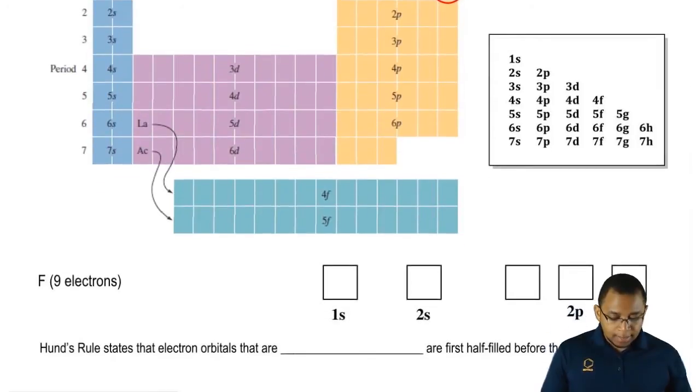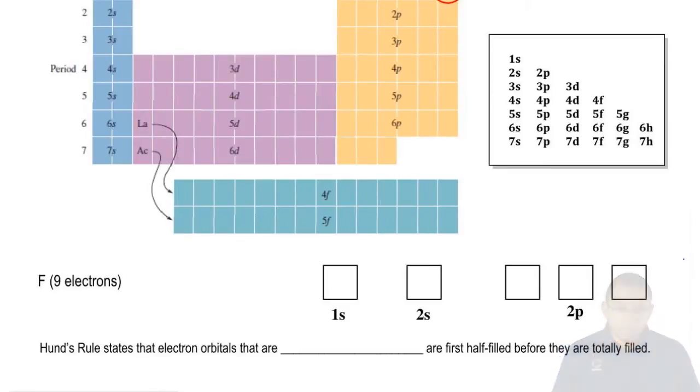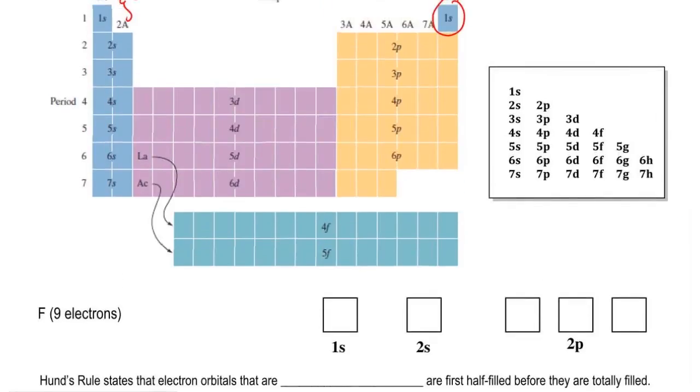Here I told us to find the electron configuration of fluorine. I'm going to take myself out of the image so we have more room to work with. We're looking for the electron configuration of fluorine. I tell you that fluorine has nine electrons. Let's look on the periodic table and see where do we find fluorine.